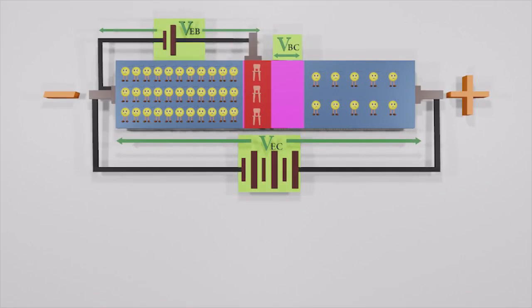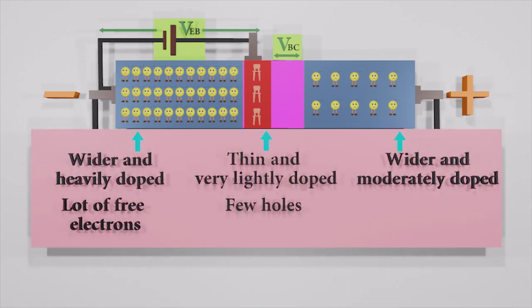Let us recall the constructional and doping details of the NPN transistor. Here, the emitter region has high concentration of free electrons. The base region, on the other hand, is very thin and lightly doped. So as a result, there is a very tiny number of holes present in this region.